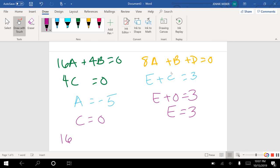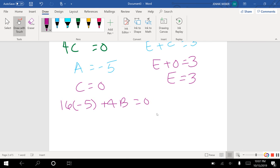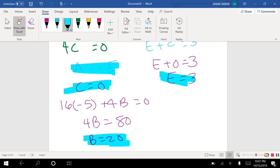Then up here, I know what A is. So 16 times negative 5 plus 4B equals 0, so then 16 times 5 is 80. So 4B equals 80. Divide it by 4. B equals 20. So at this point, I have this one, this one, this one, and this one. So I've got A, B, C, I'm missing D.